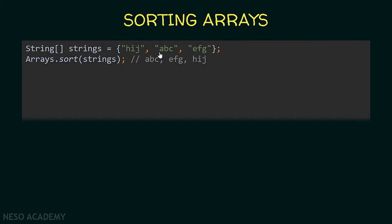You might ask how this happens exactly. When comparing two strings, we start comparing the first character with the first, the second with the second, and so on. As long as the characters are equal, we compare the next character. When we find two characters that are not equal, we compare them. For example, comparing 'ABC' and 'EFG': A and E are not equal. The character A is less than E because the Unicode of A is less than the Unicode of E — in other words, A comes alphabetically before E. So the string containing the smallest character is the smallest string. This is why we see ABC before EFG.